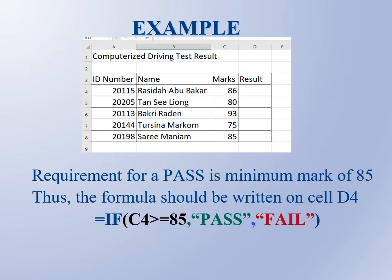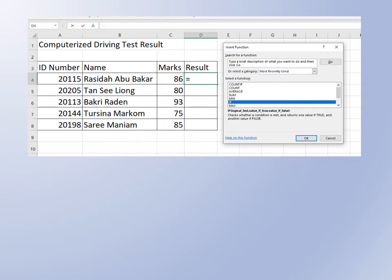Otherwise, if C4 is less than 85, the result should be fail. However, Excel has simplified this for you.